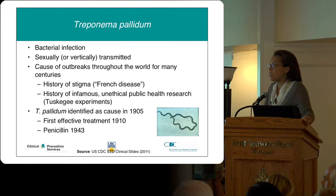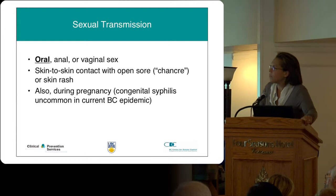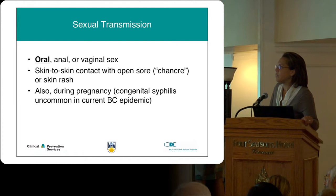Sexual transmission is via oral, anal, and vaginal routes, and also through skin-to-skin contact with open sores. During pregnancy, we see congenital syphilis, which fortunately is uncommon in BC because we're quite aggressive about syphilis management. Syphilis is the great imitator, and there are phases: infectious syphilis includes primary — symptomatic, three days to three months; secondary — two weeks to about six months; and early latent — no symptoms but within the first year.